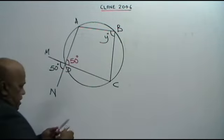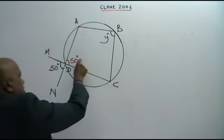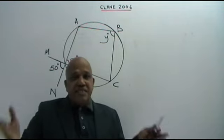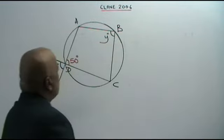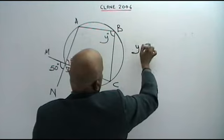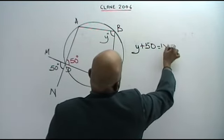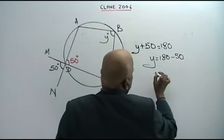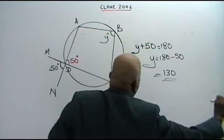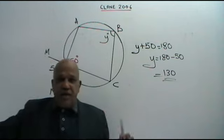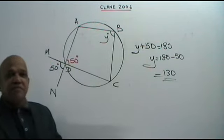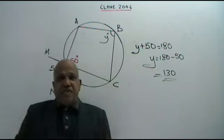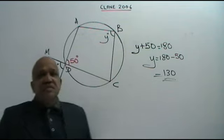Since ABCD is a cyclic quadrilateral, the opposite angles are supplementary — they add up to 180 degrees. So Y plus 50 equals 180. Therefore Y equals 180 minus 50, which gives Y equals 130. If you are well-versed with angle theorems and circle theorems, you will find these sums very simple.